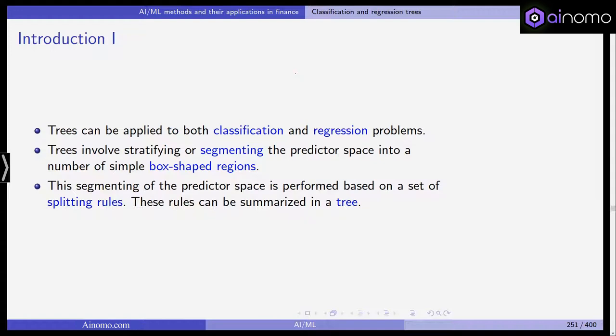These trees involve stratifying or segmenting the predictor space into a number of simple box-shaped regions. We've seen this with the support vector machines and the support vector classifier. What happened was that we took the predictor space, for example the three-dimensional space, and we cut it into two halves. So we stratified or segmented the predictor space.